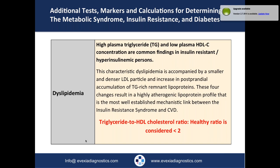Other tests to consider include looking at dyslipidemia — specifically the triglyceride to HDL cholesterol ratio. Elevated triglycerides and low HDL-C are common findings in insulin resistance and hyperinsulinemia. The triglyceride-to-HDL-C ratio is considered healthy when it's under two. If they don't do the math for you, you can calculate it yourself from the lipid panel.